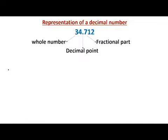Any decimal number has three parts: the whole number, the fractional part, and the decimal point. The whole number and fractional part are separated by the decimal point. The left side of the decimal point is the whole number part, and the right side of the decimal point is the fractional part.